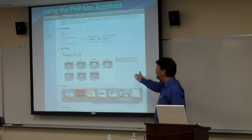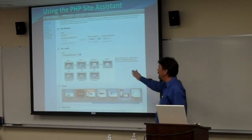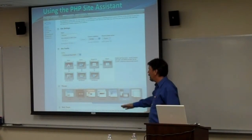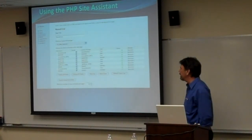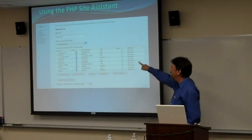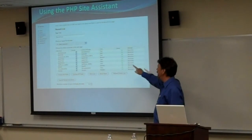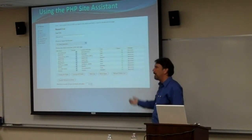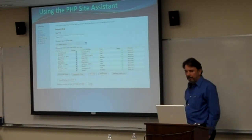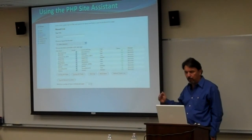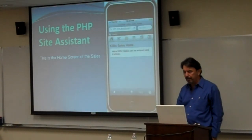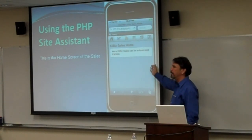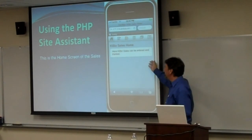It creates all these pages for you automatically: a home page, search page, list view, report view, browse view, add a record, and edit a record. You come in, pull up your database, pick the fields you want on the layout, organize them in a certain order, and it creates all the pages for you — like a wizard. It literally took me less than an hour to get it up and running on my iPhone, and here it is — here's my home page.